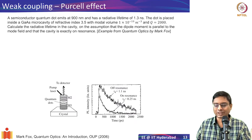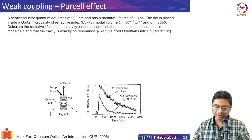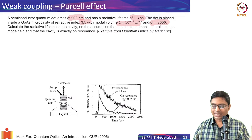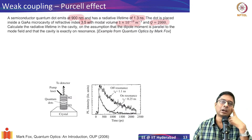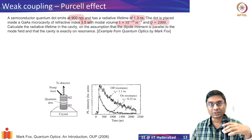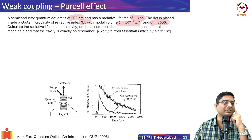I'll show you one example of how this happens, taken from Mark Fox's book. Here you have a semiconductor quantum dot which emits at 900 nanometers wavelength and has a radiative lifetime of 1.3 nanoseconds. The dot is placed in a gallium arsenide micro-cavity of some refractive index, modal volume, and Q factor. Calculate the lifetime in the cavity — a cavity with small volume and high Q factor.